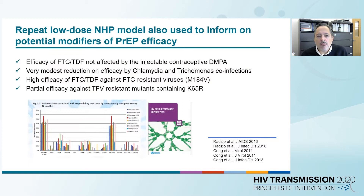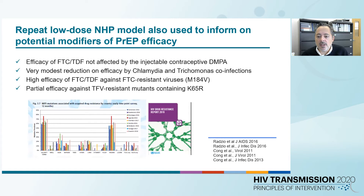We not only assess efficacy, but we can also inform on potential modifiers of efficacy. We've done many studies with FTC-TDF through the years and shown that, for instance, efficacy of this combination is not affected by injectable contraception. We found a very modest reduction in efficacy in macaques co-infected with chlamydia and gonorrhea. We demonstrated high efficacy of FTC-TDF against FTC-resistant virus, and we also found partial efficacy against viruses that harbor the K65R mutation. These are very important findings because K65R is probably one of the most prevalent mutations associated with acquired drug resistance.